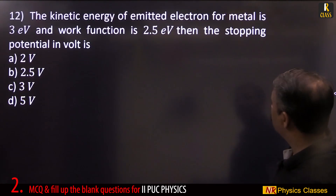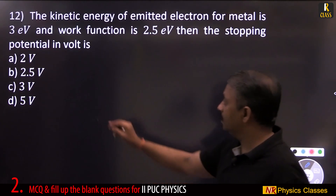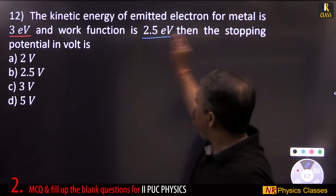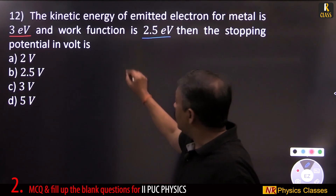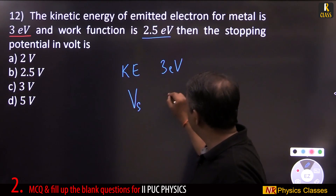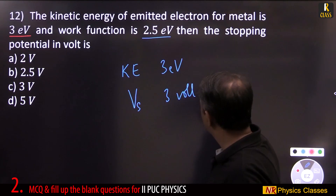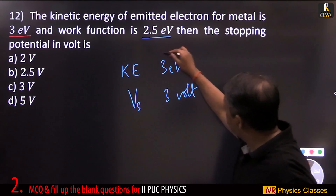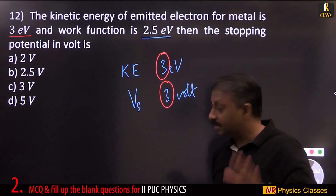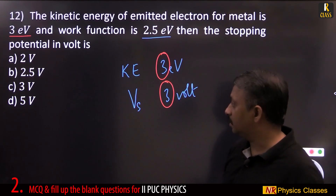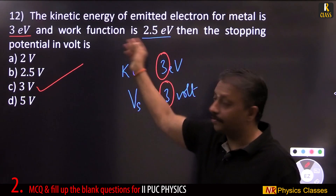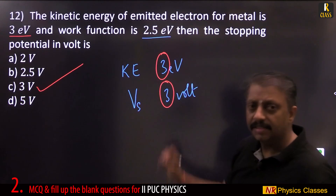The kinetic energy of an emitted electron from a metal is 3 eV and the work function is 2.5 eV. The stopping potential equals the kinetic energy in electron volts converted to volts — so stopping potential is 3 V. The work function (2.5) is given just to mislead; it is not needed here.